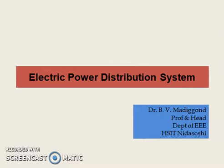It is impossible to distinguish the transmission system and the distribution system just based on their voltage level, because what was considered as high voltage earlier has now become low voltage. So in general, the distribution system is that part of a power system which distributes power to the consumers for utilization.